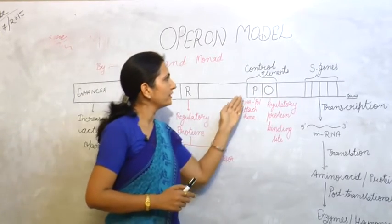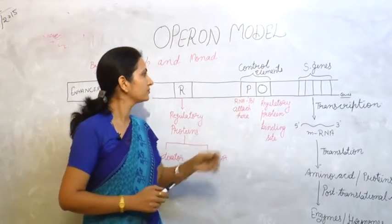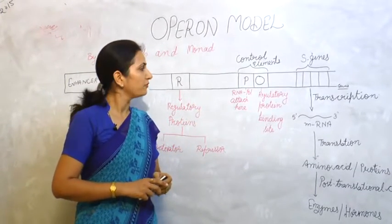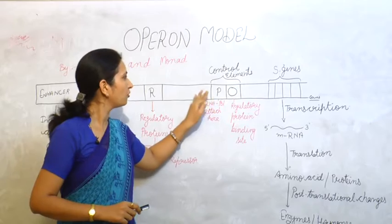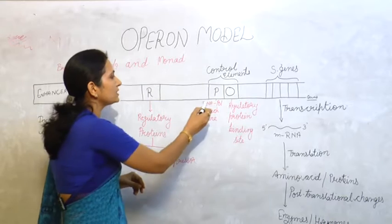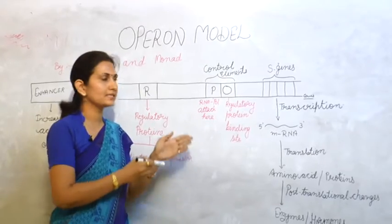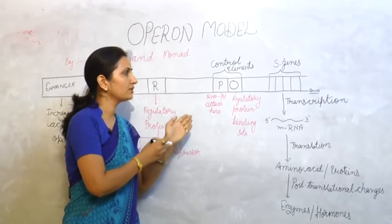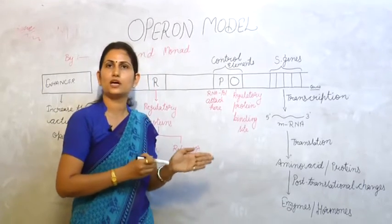Next we have two control elements. Their names are promoter and operator. Promoter is basically the RNA polymerase binding site. It means RNA polymerase attaches here, and when RNA polymerase attaches, only after that does the transcription process start and the hormones and enzymes are made.